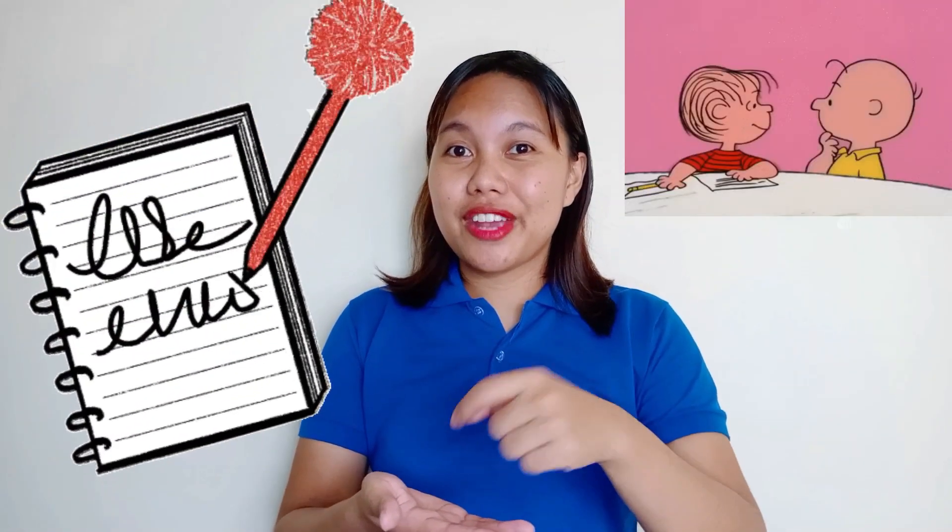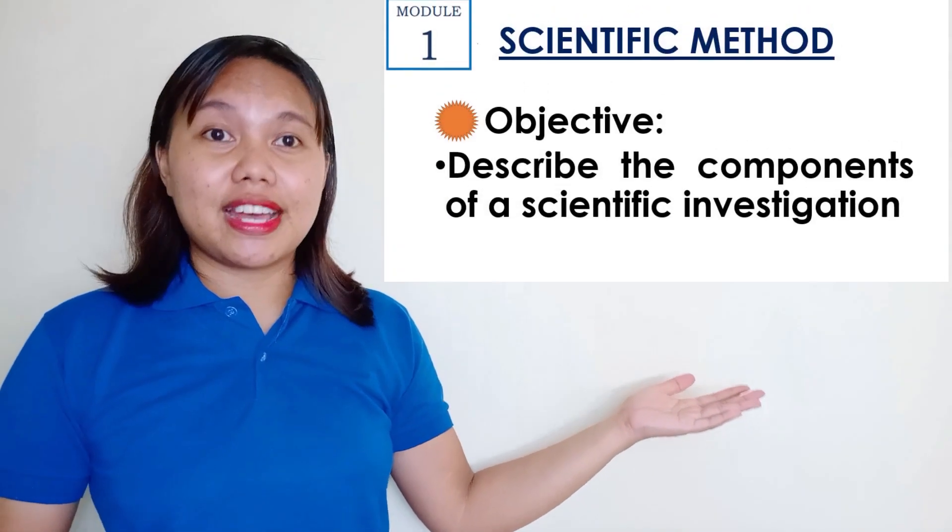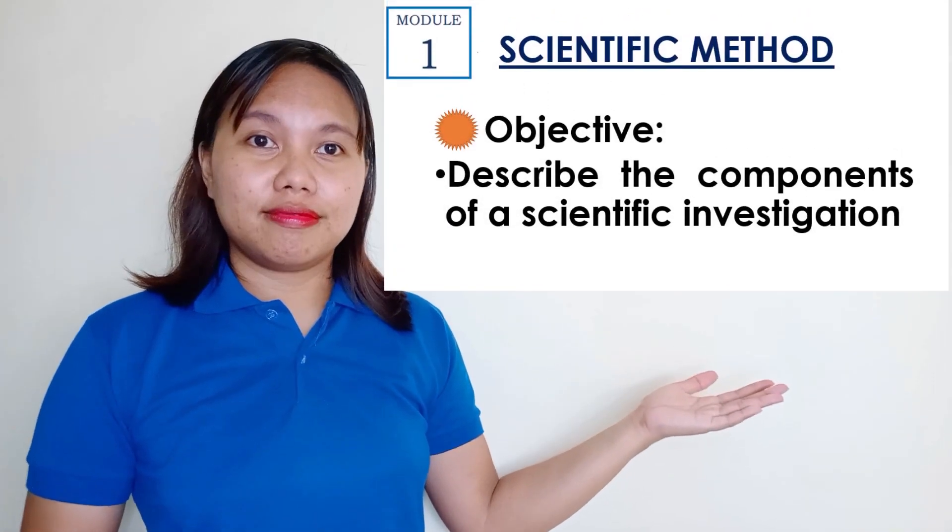Now, before we start our lesson, please prepare your pen, notebook, paper, and also a comfortable place for you to write your answers. Let's try first to read our objective for this morning: Describe the components of a scientific investigation.